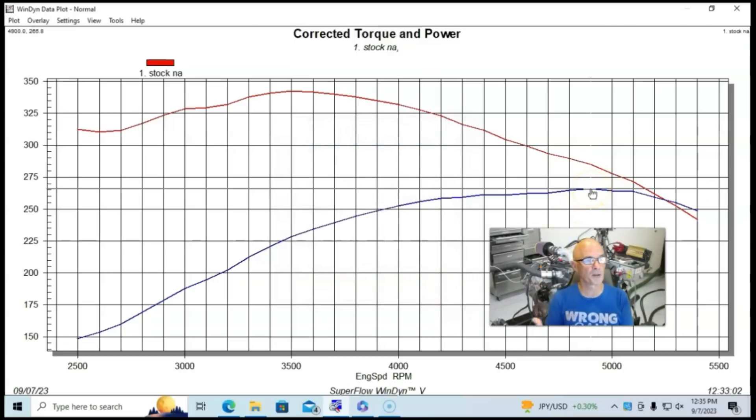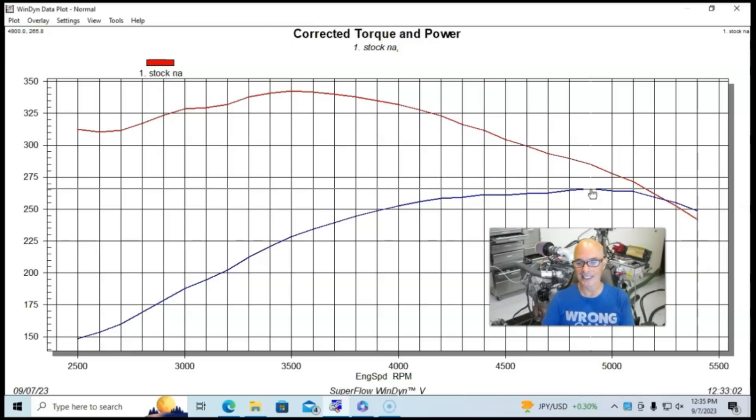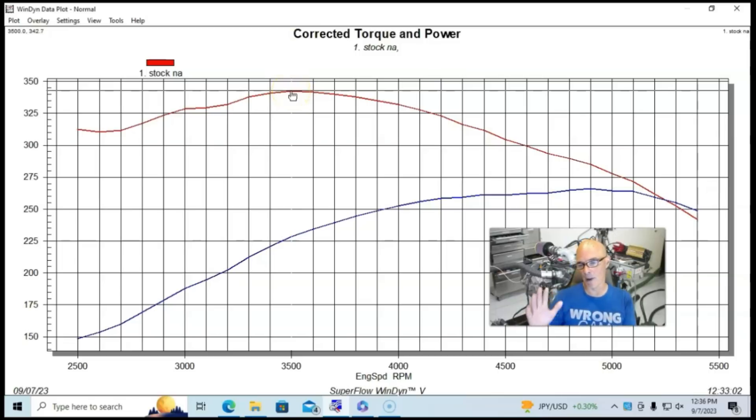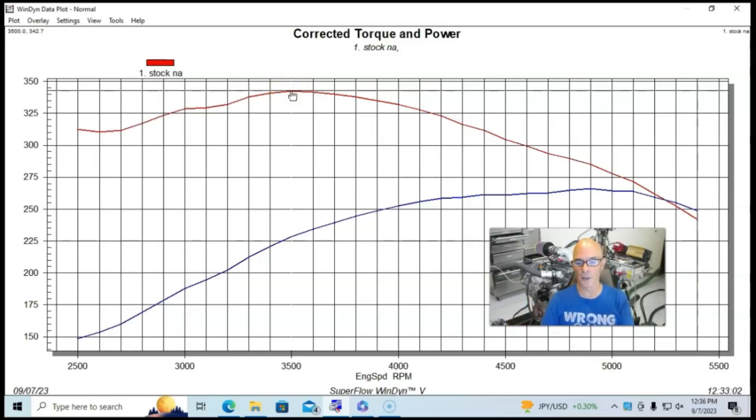Rated at 225 horsepower. This thing actually made 266 horsepower, 265.8, all the way out here at 4,900 RPM. And owing to its mild nature, made more torque than horsepower, 343 foot-pounds of torque. So now let's take a look and see what happened.